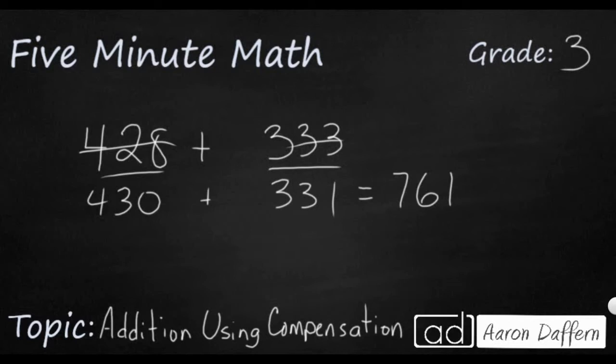Now, let's do it the old-fashioned way just to make sure we didn't mess anything up. 428 plus 333. And if you wanted to line it up like this, you could do it. 8 plus 3 is 11. 1 and 2 is 3. 3 and 3 is 6. And 4 and 3 is 7.